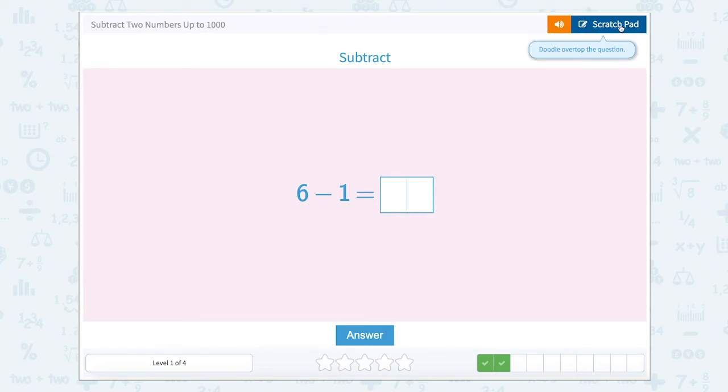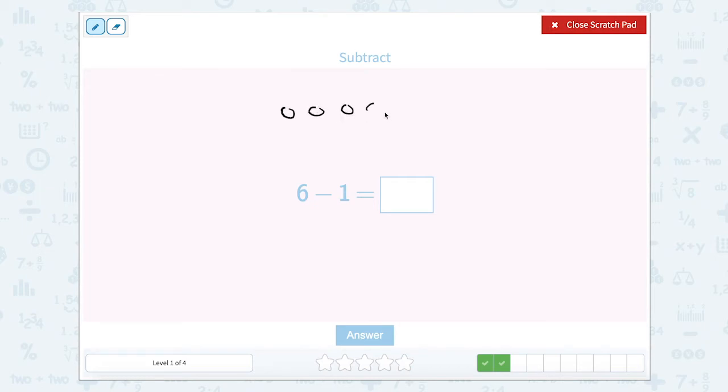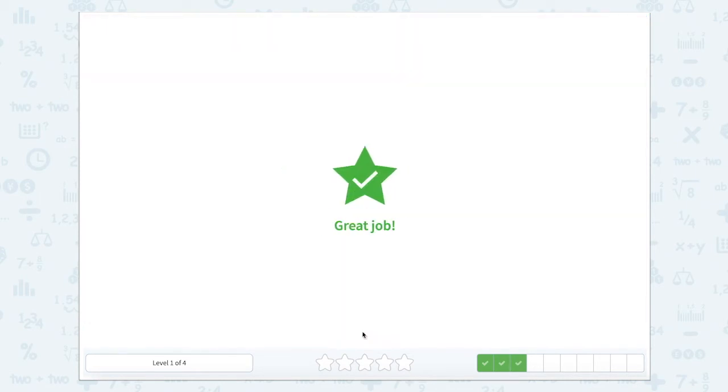Six minus one. Let's do the same thing. Let's draw six circles. One, two, three, four, five, six. And let's take away one. That leaves us with one, two, three, four, five. Close my scratch pad. Type in five. Set that answer.